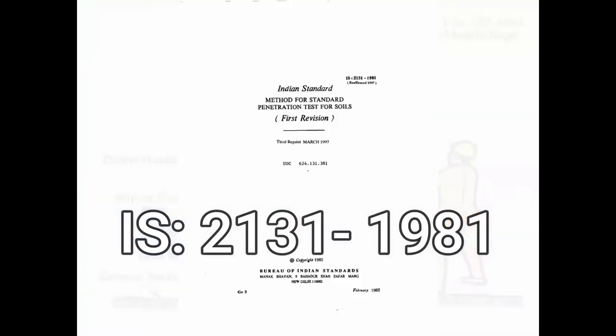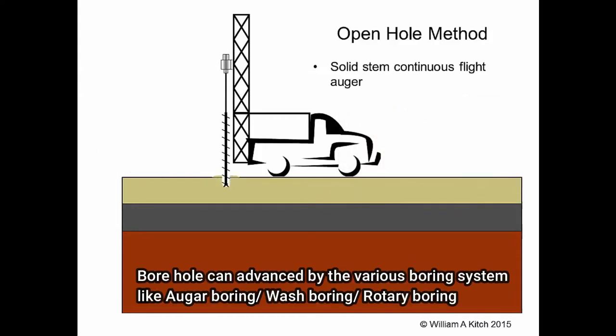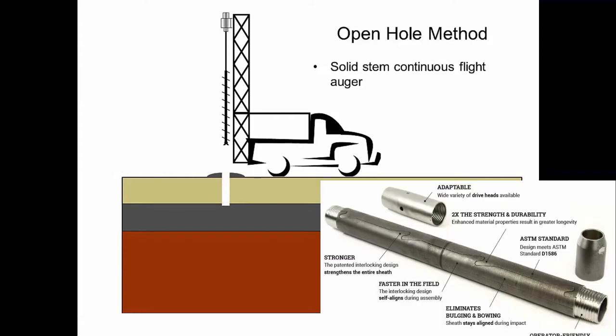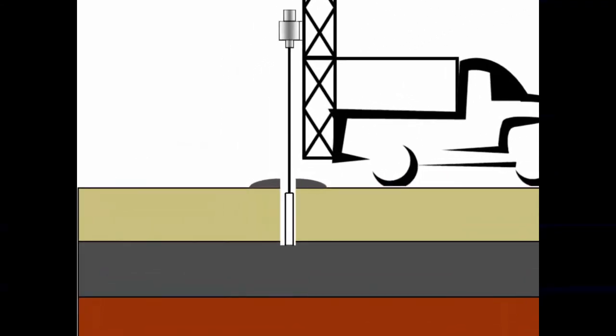IS 2131 gives the standard procedure for carrying out the test. The primary requirement is the borehole. The borehole is advanced to the required depth, the bottom is cleaned, the drilling bit is detached from the drilling rod, and the split spoon sampler is attached for the required length and lowered down into the borehole and rested at the bottom.